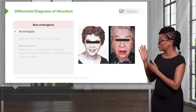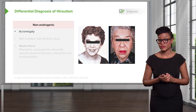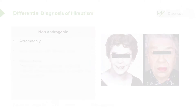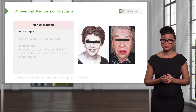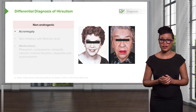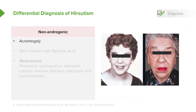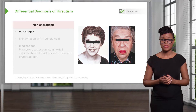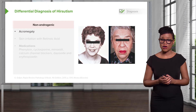Here I have a picture of a patient in her younger years versus her later years. Is there anything you notice about the patient besides her aging? If you said her features look coarse, then you're correct. This is very common with acromegaly, and this is a cause of hirsutism.